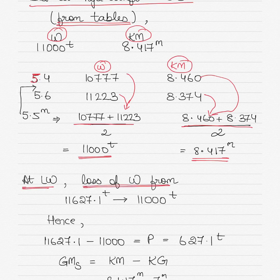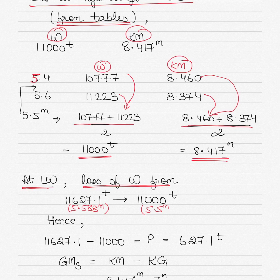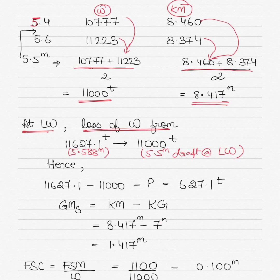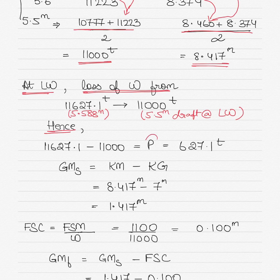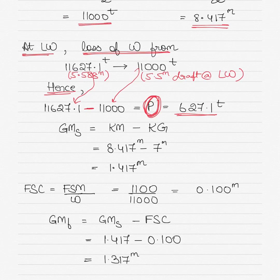At low water, the additional loss of displacement from the hydrostatic draft of 5.588 meters down to 5.5 meters represents further weight being taken by the seabed. P, the apparent loss of vessel weight as it sits completely on the seabed, equals the difference between the two displacements: 11627.1 minus 11000, which is 627.1 tonnes.